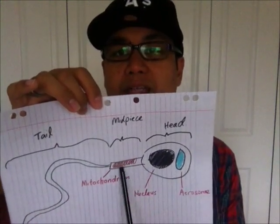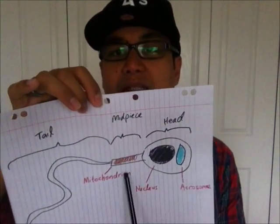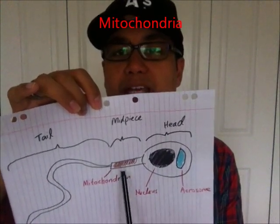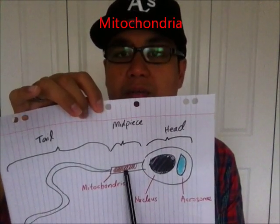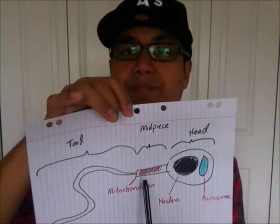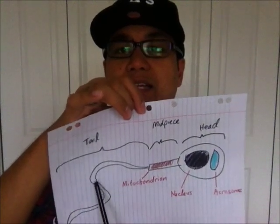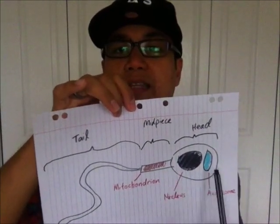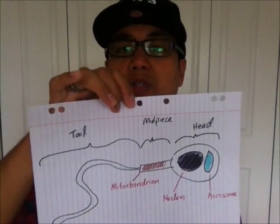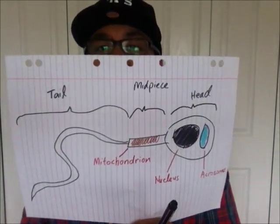The midpiece is basically the engine or fuel for this sperm. It contains a lot of mitochondria, which produces ATP — the essential energy molecule of many biological cells. So that helps propel this sperm forward. And this would be the tail, which actually propels the sperm forward. The sperm is the only cell in humans that has a flagella. No other human cell has a flagella on it.